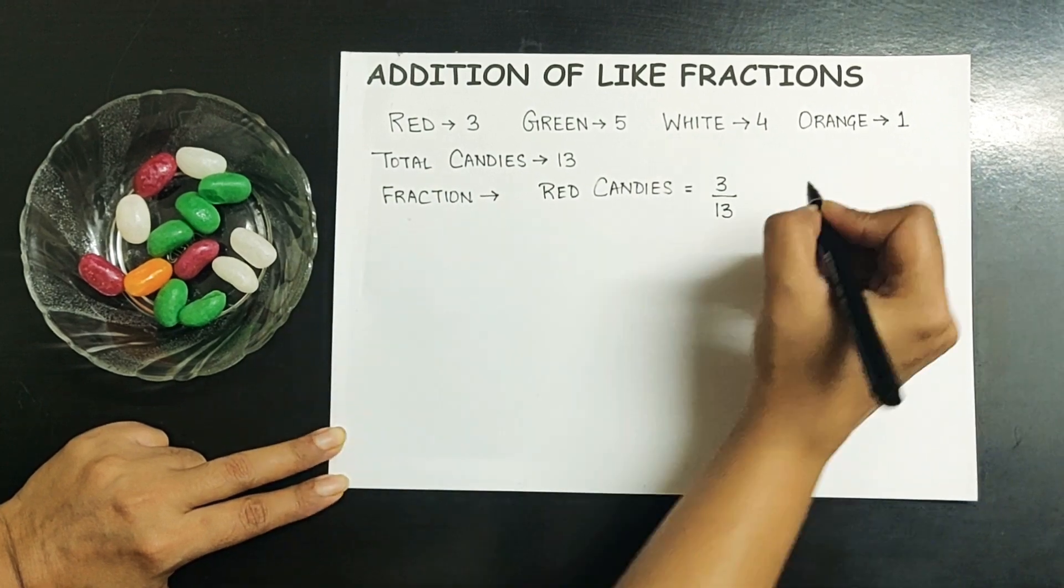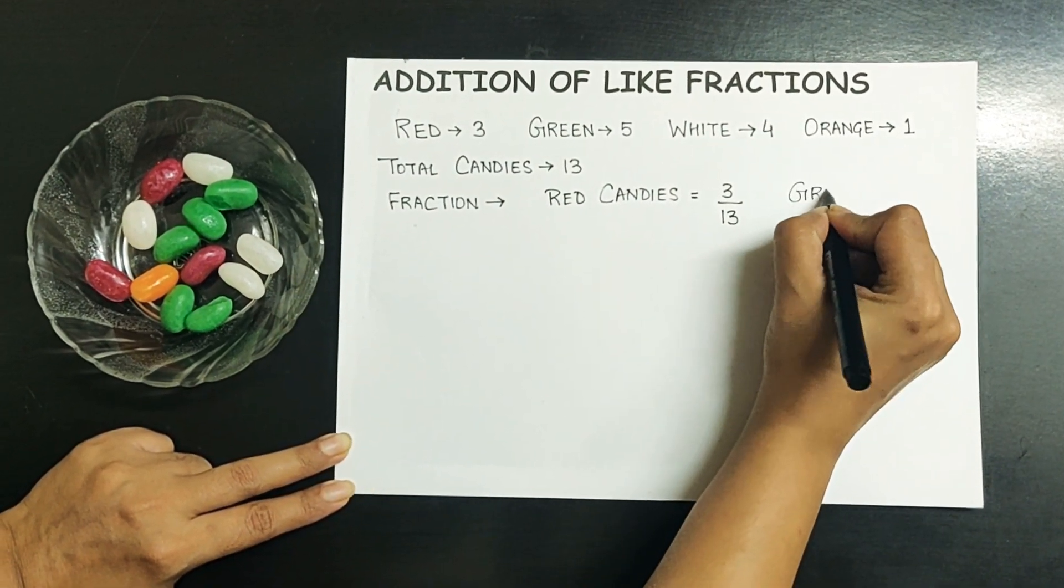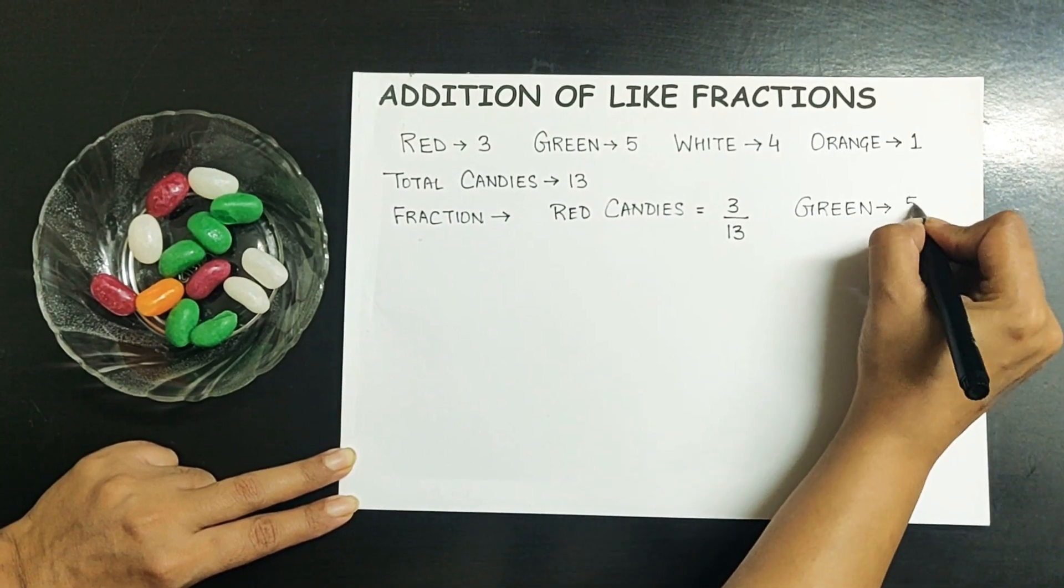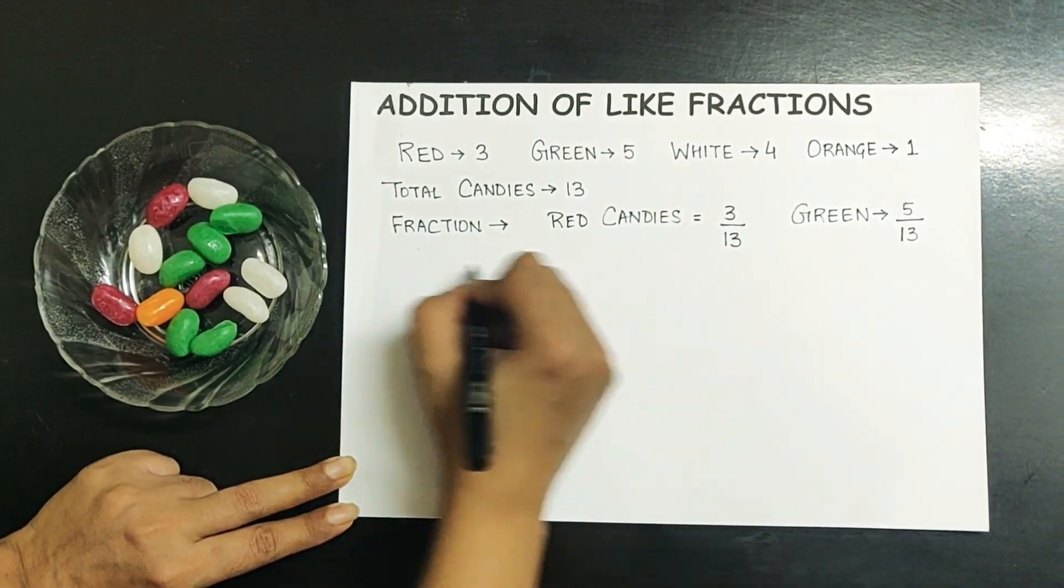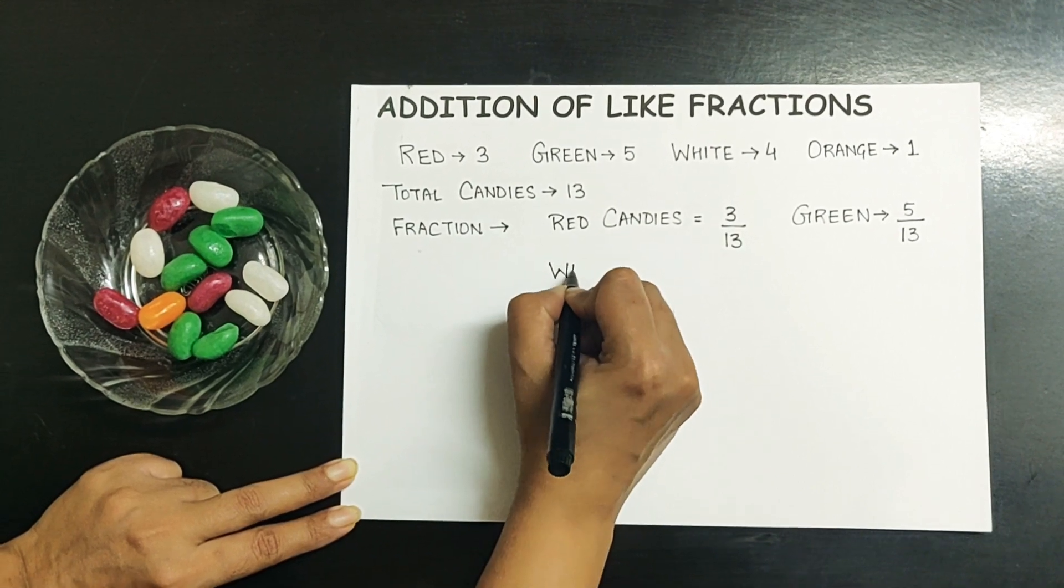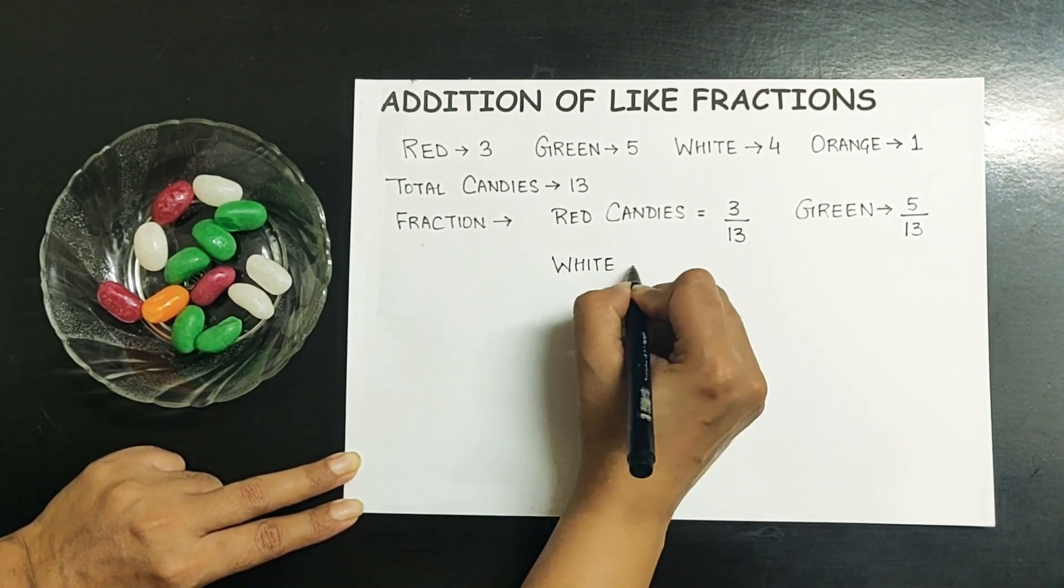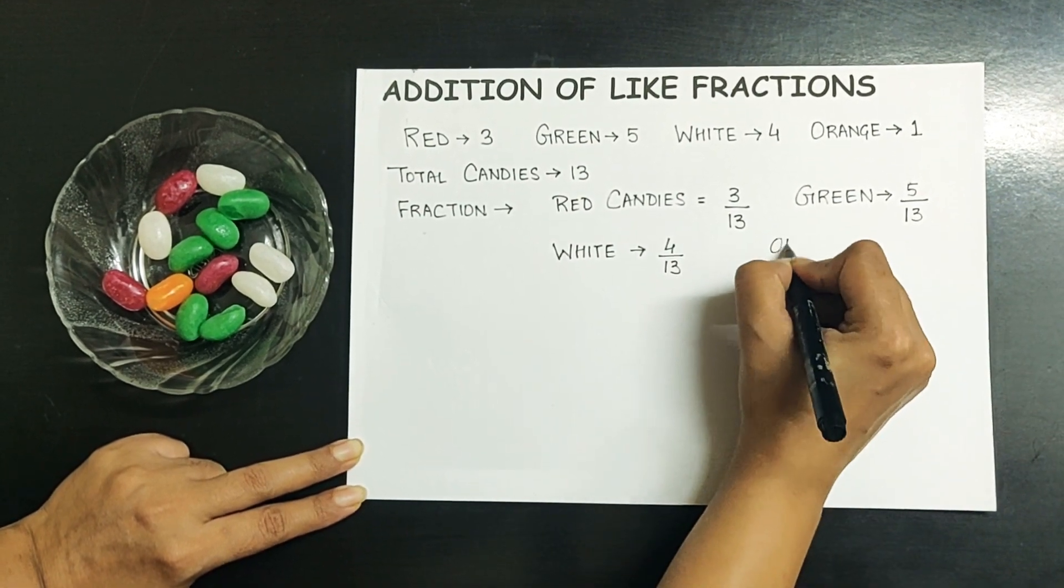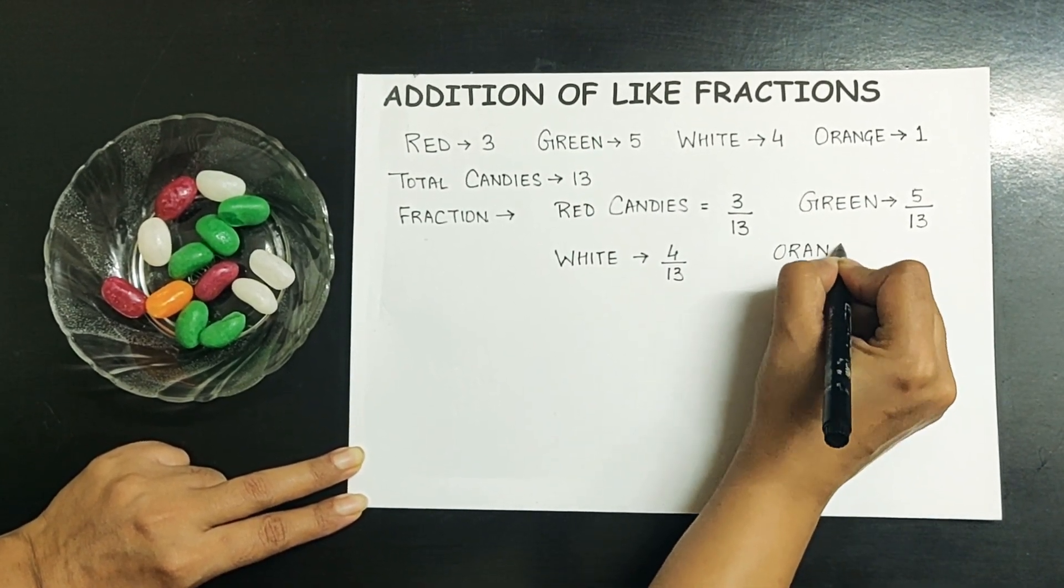Similarly, the fractions for the other colors will be: for green it will be 5 upon 13, white it will be 4 upon 13, and orange it will be 1 upon 13.